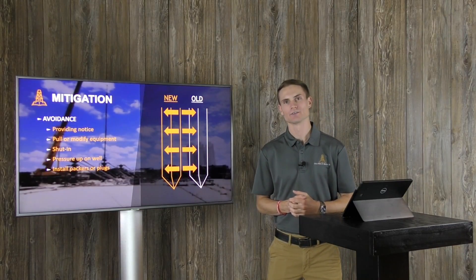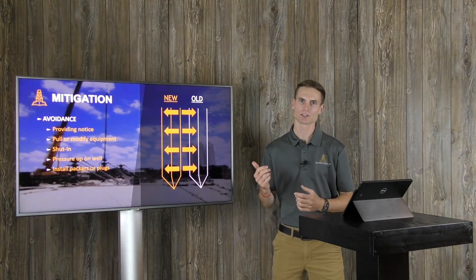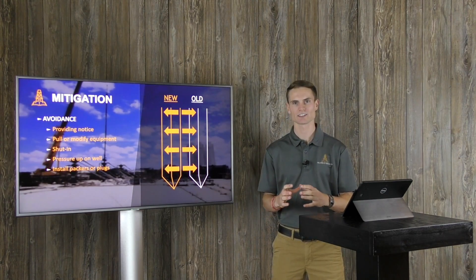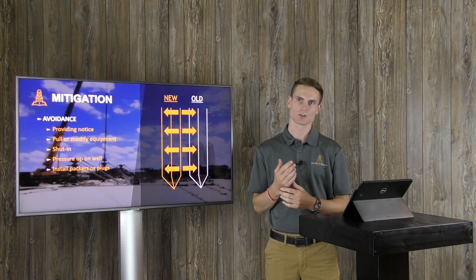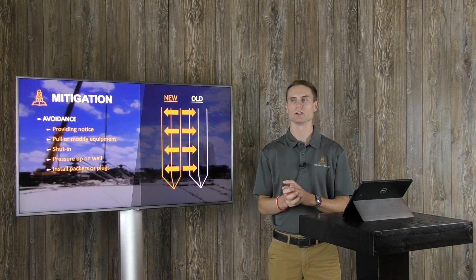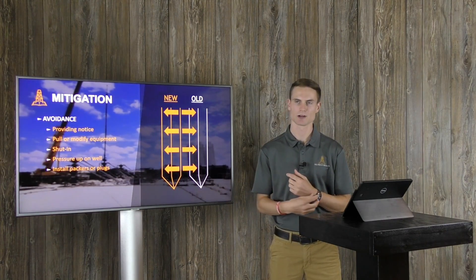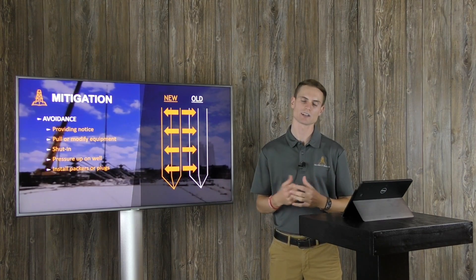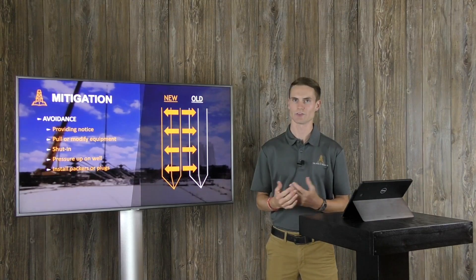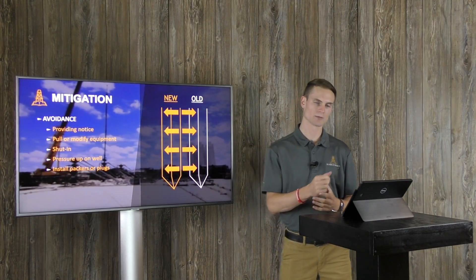Another way to potentially mitigate the risks of a frack hit is to install packers or plugs down hole. So again, this is just trying to help provide isolation of the surface equipment. So you don't have to worry about swapping out your wellhead parts or anything to make sure it's up to spec. This might be one way you can avoid some of those costs. And also maybe to help again help with the pressure sink that it won't be as severe and take on as much fluid or as much of a frack hit.